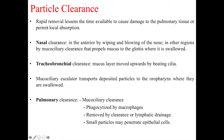Rapid removal lessens the time available to cause damage to pulmonary tissue and permit local absorption. This can occur in each of the main regions of the airway. Nasal clearance — particles in the anterior nose can be removed by wiping and blowing. In other regions, mucociliary clearance propels mucus to the glottis where it is swallowed. Tracheobronchial clearance involves the mucus layer moved upwards by beating cilia, and a mucociliary escalator transports deposited particles to the oropharynx where they are swallowed.